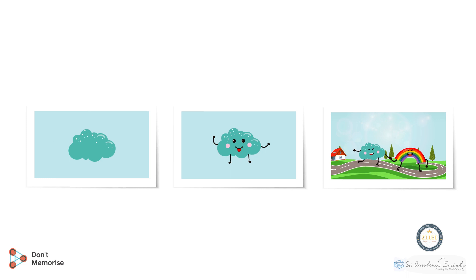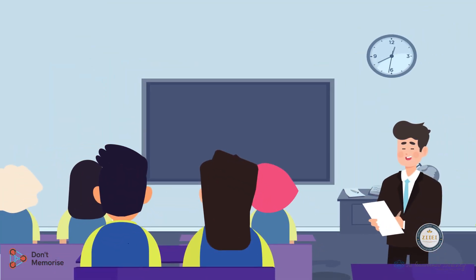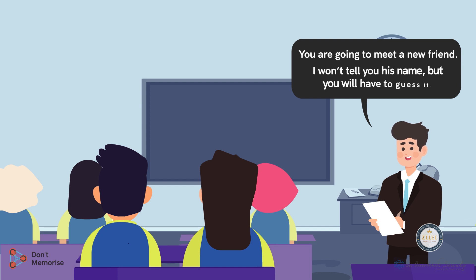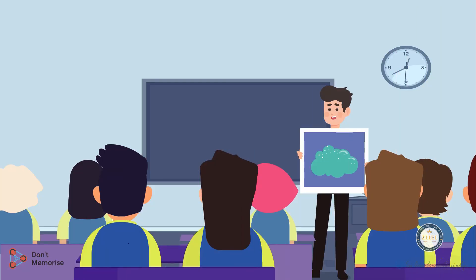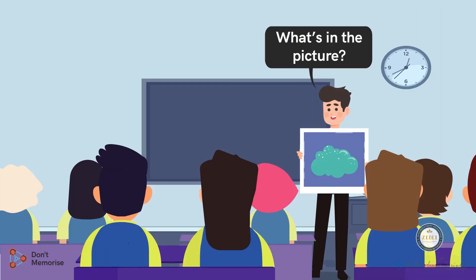Now that we're ready with everything, let's begin. Start by announcing to the class you're going to meet a friend of mine. Following which we shall say, 'I will not tell you the name of my friend, you will have to guess it.' This will help build the students' curiosity. Now display the picture card of the fluffy cloud and ask the students, 'what's in the picture?'